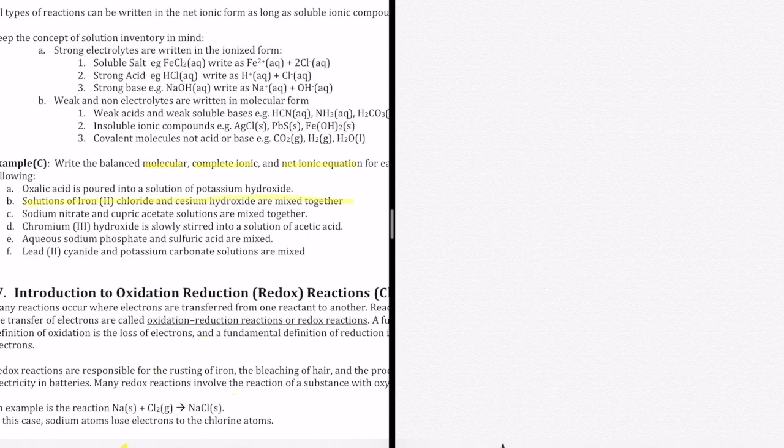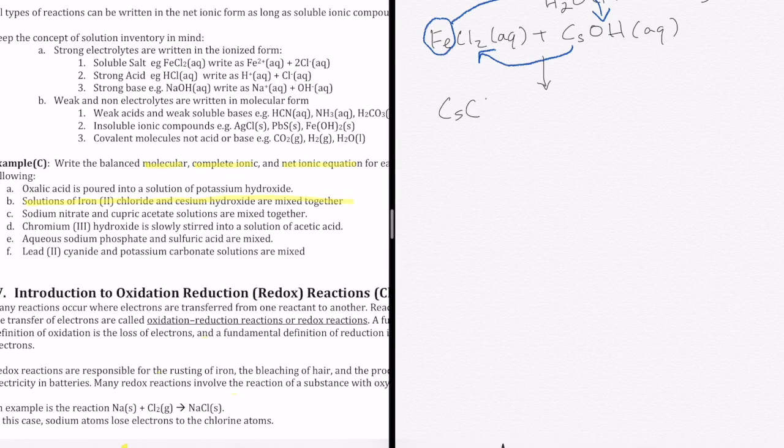The first thing is you write what the reactants are. Iron(II) chloride would be FeCl2 and cesium hydroxide would be CsOH. The products would be a double displacement product. I'm going to swap and put the Fe with the OH and put the Cs with the Cl. So CsCl and Fe(OH).